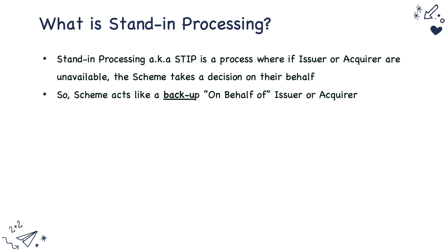We all know that an authorization flows from an acquirer, then to the scheme, and then to the issuer. What if, for some reason, the issuer is down or not reachable? In that case, the scheme stands in on behalf of the issuer to process the authorization.